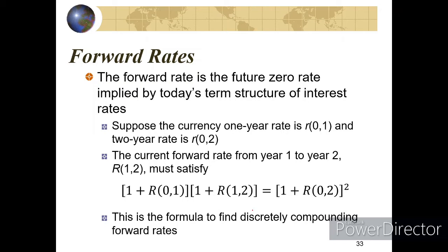An important note: all rates here must be expressed using the same convention. If these rates are effective rates, then all rates must be effective rates. Otherwise, if they are nominal rates, we divide by M. The implied forward rate we get will also be an APR, not an effective rate.